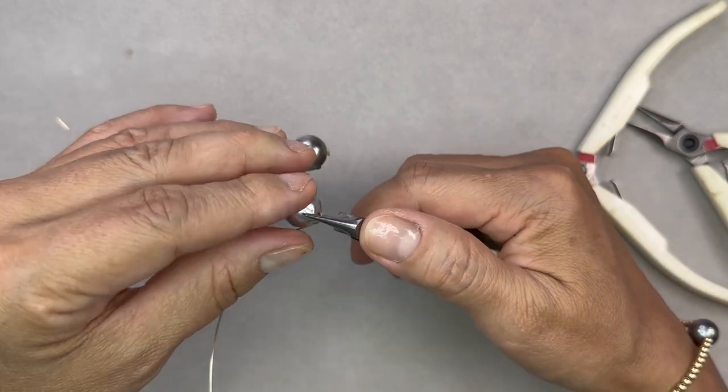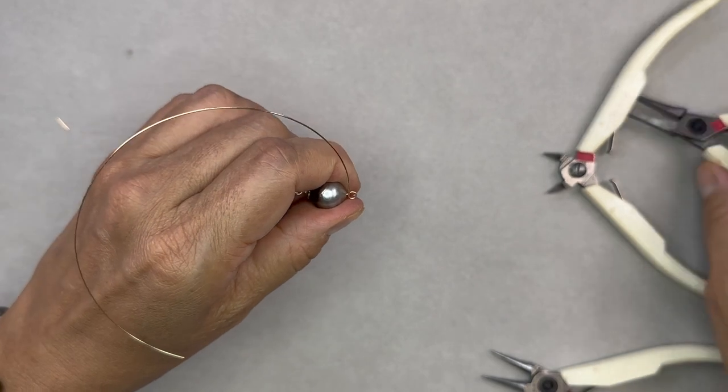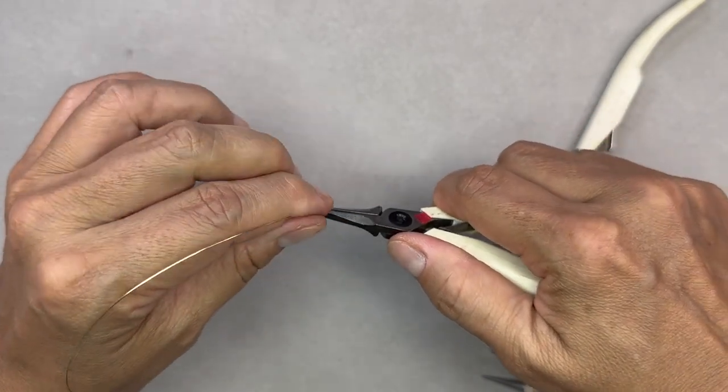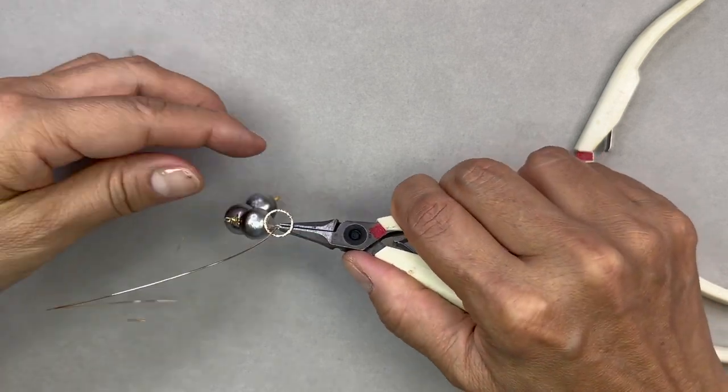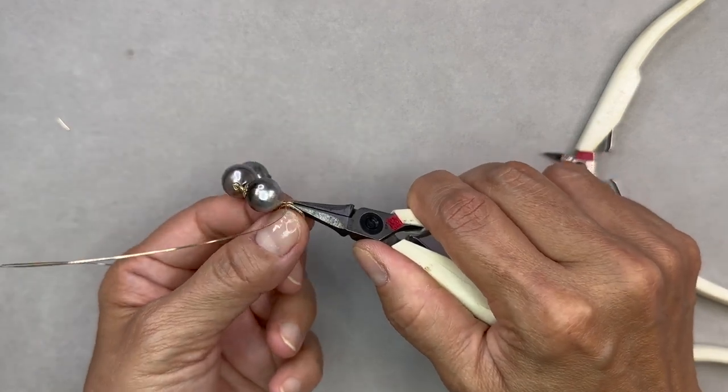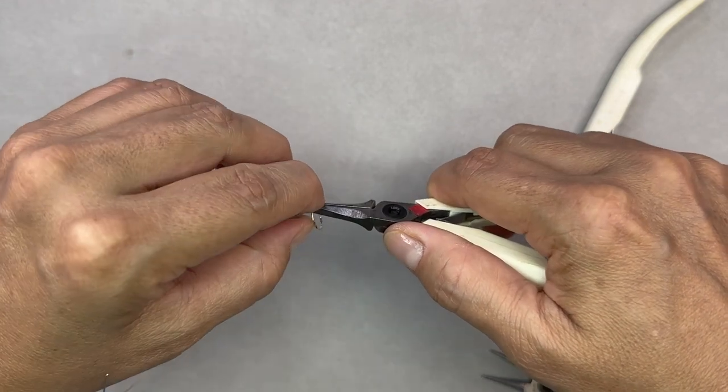You may notice that I'm using my round nose pliers to turn the 90 degree angle. Now in our tutorials we use our chain nose pliers to do that but because the round nose pliers are so awesome with these Lynch pins that it can turn a very nice sharp 90 degree and the wire is on the thinner side at 24 gauge so it works.